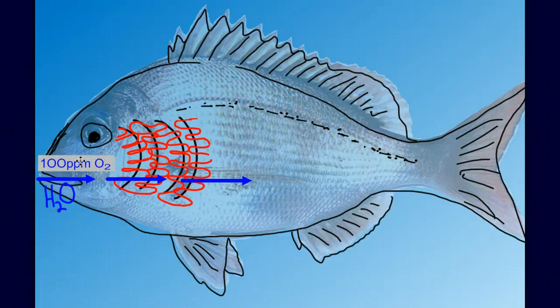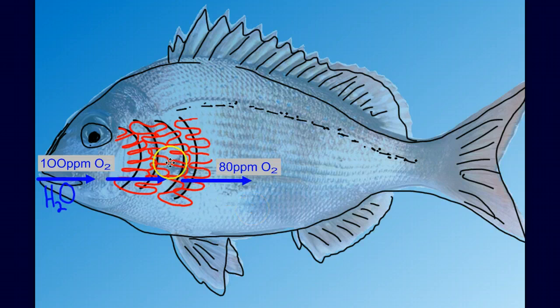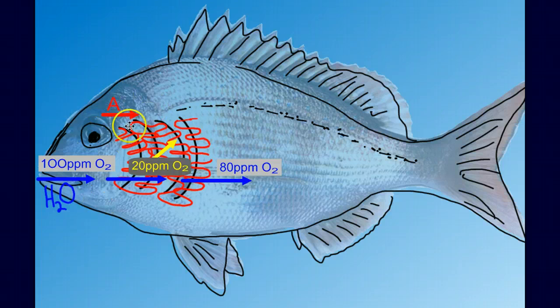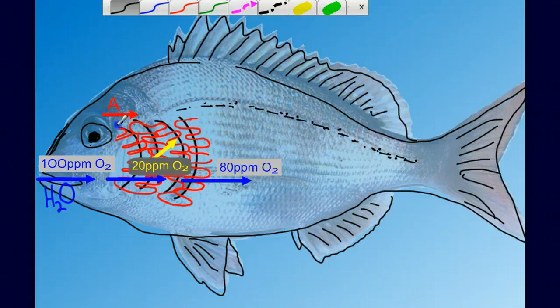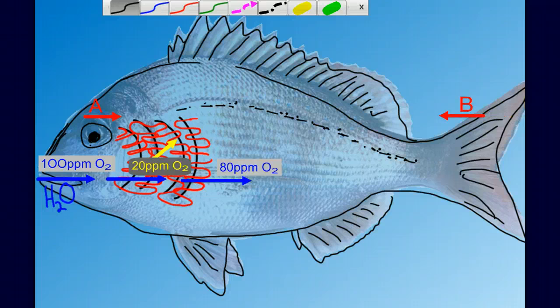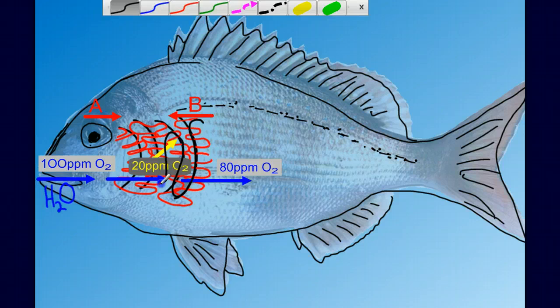Imagine that the water coming into the fish's mouth has 100 parts per million of oxygen. By the time it reaches the end of the gills, it's down to 80. So we've extracted 20 parts per million of oxygen out of the water diffused into the blood. Now I'm going to let you be the bioengineer. You have the option A to send the blood into the gills from the front, or you could have option B, sending the blood through the gills from the back and out the front.